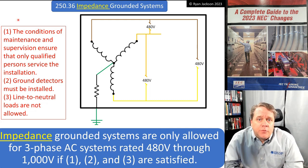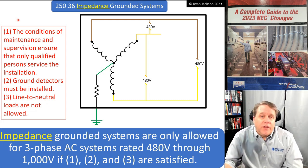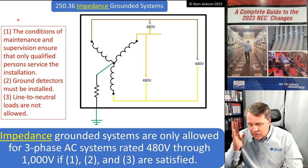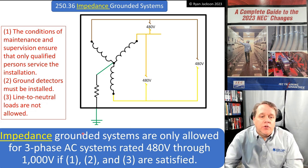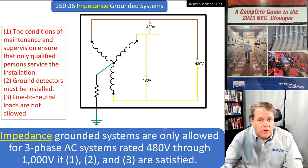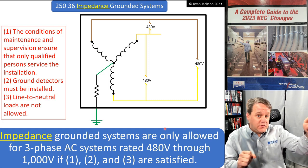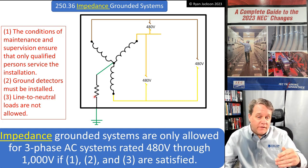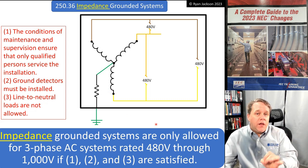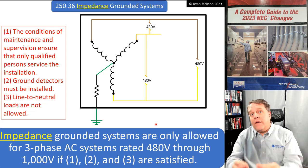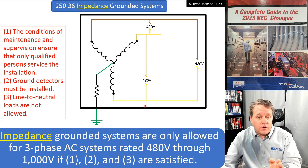Condition one: conditions of maintenance and supervision must ensure that only qualified persons are going to service the installation. You can't put this in a regular office building or a 7-Eleven - this is sophisticated stuff limited to industrial facilities. Condition two: you need to have ground detectors installed. With high impedance grounding, you set the resistance to a high value, which means you're going to have low amounts of fault current. That impedance limits the current that flows under fault conditions.